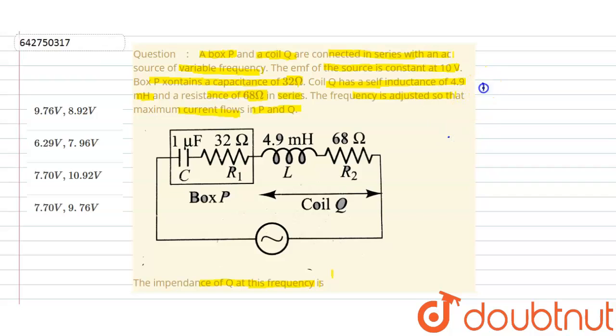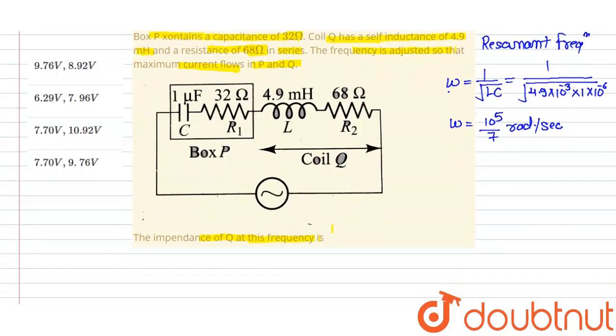So first of all, we calculate the resonant frequency. Resonant frequency omega is equivalent to 1 upon root of L into C. That is 1 upon root of L which is 4.9 into 10 to the power minus 3, and the capacitance is 1 into 10 to the power minus 6. When we calculate that, we get 10 to the power 5 upon 7 radian per second. That is the resonant frequency.